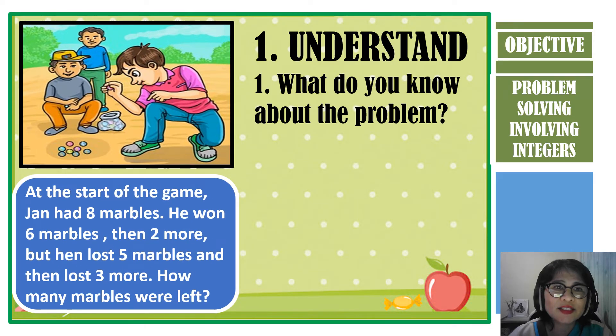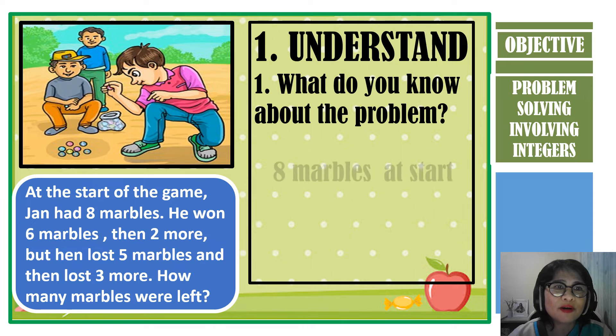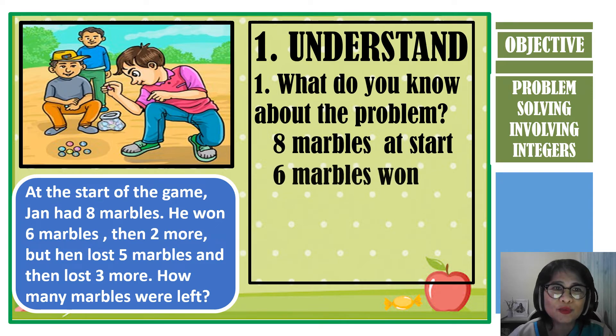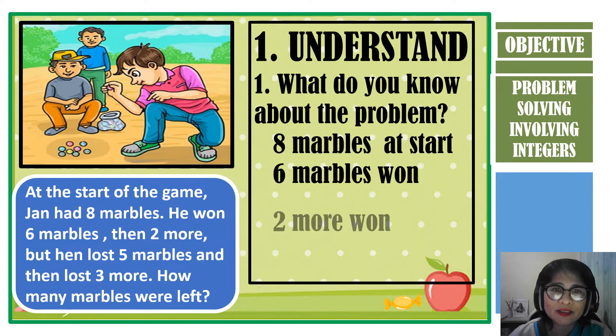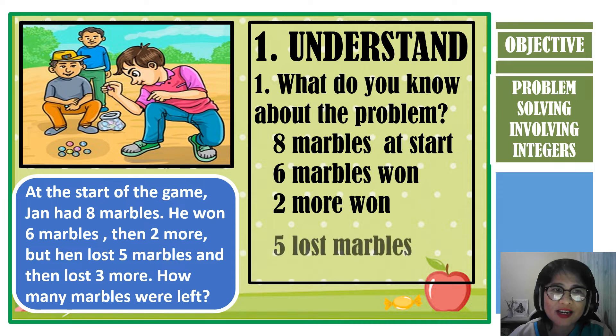For us to understand the problem, we should know the given information. At the start, John had 8 marbles. And then he won 6 more marbles, and won again 2 more. But then he lost 5 marbles, and at last he lost 3 more.